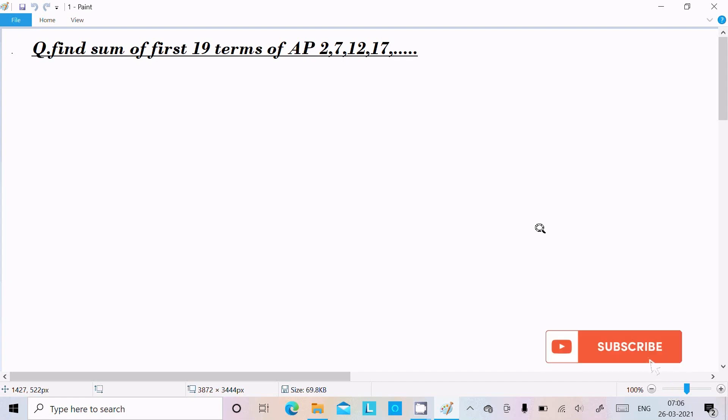In this video lecture, I am going to find the sum of 19 terms of the AP. So let's see the answer. So here first I am going to write the given AP arithmetic progression: 2, 7, 12, 17, and so on.